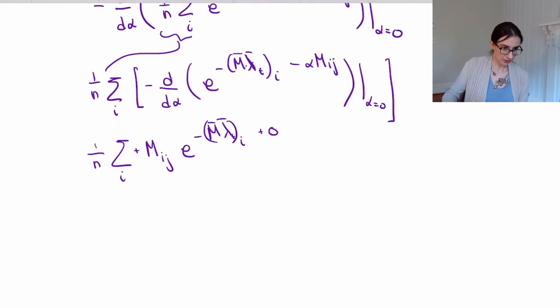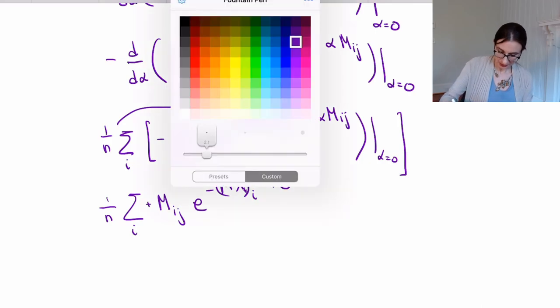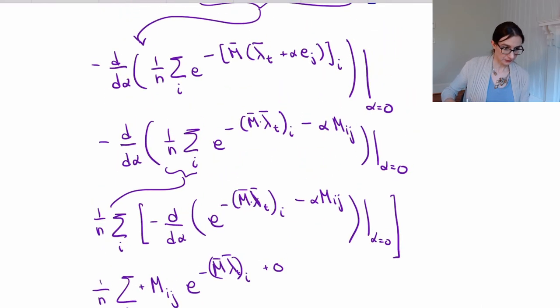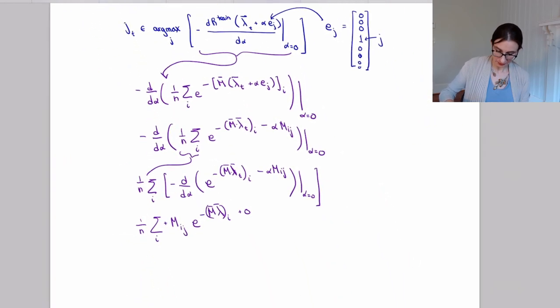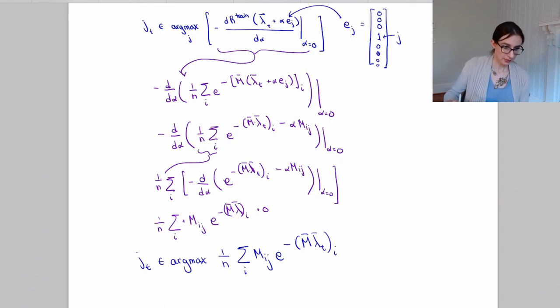So just to back it all out, I have j_t as in argmax, and then it's 1 over n, sum over i, m_ij, e to the negative m lambda t, take the i-th component. That's it. So this is the calculation I wanted. This is the steepest direction.